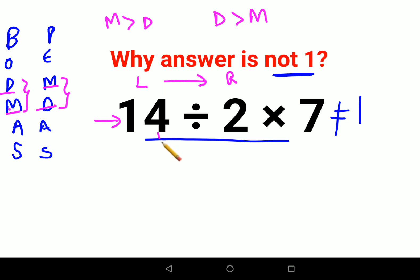So here in this case, what we'll do first is 14 divided by 2, which is 7, and then we'll continue with multiplication of 7. So the answer is 49 and not 1.